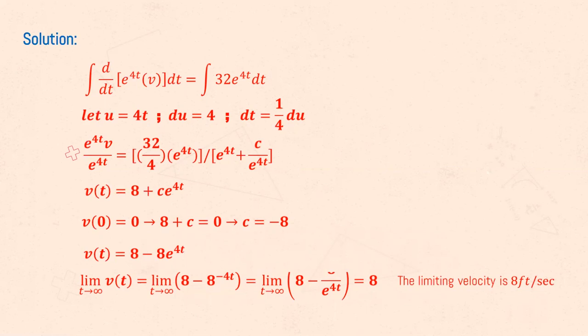Plugging in t equals 0, we find that c is equal to negative 8 and that the velocity function is equal to 8 minus 8e raised to negative 4t.